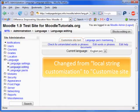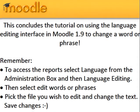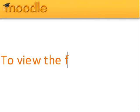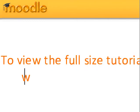This concludes the tutorial on using the Language Editing interface in Moodle 1.9 to change a word or phrase. Remember, to access this, select Language from the Administration box and then Language Editing. Then select Edit Words or Phrases. Pick the files you wish to edit and change the text, then save changes. To view the full-size tutorial, go to www.moodletutorials.org.